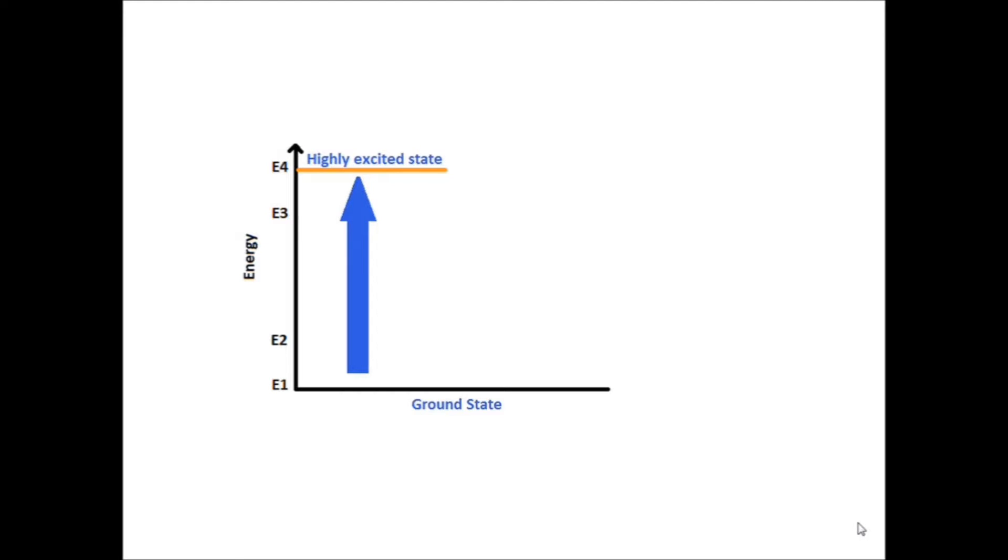In a four-level laser, the atom is excited to the highly excited energy level state, and then undergoes fast non-radiative transition to a metastable state, as in the three-level laser. Here again, the atoms can accumulate.